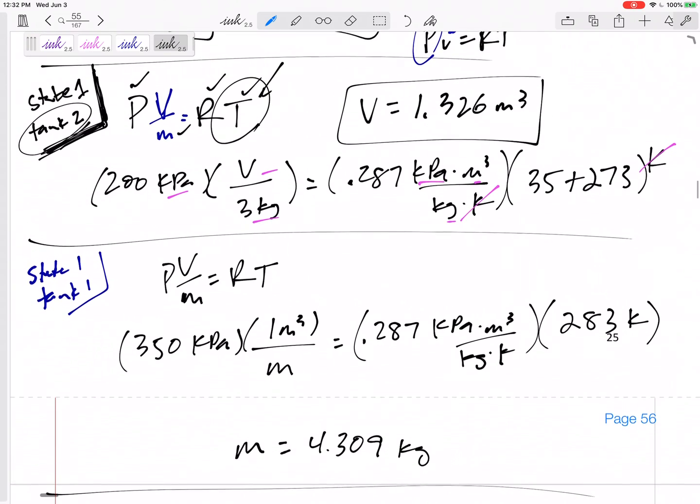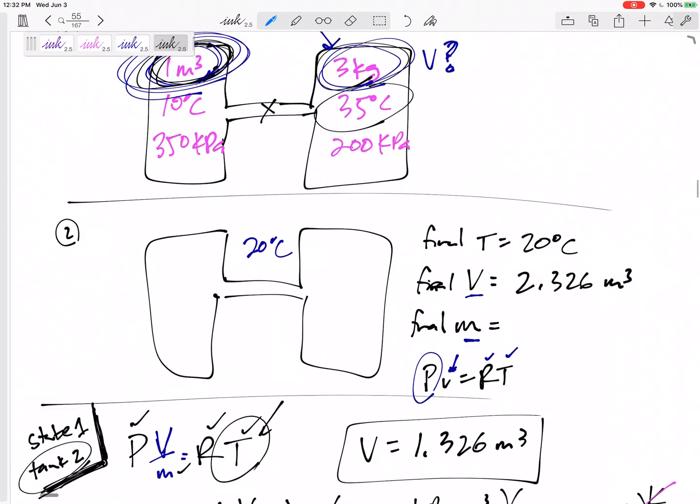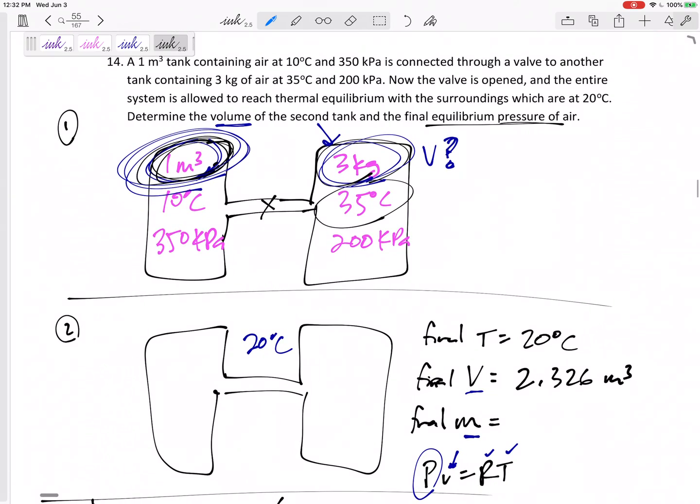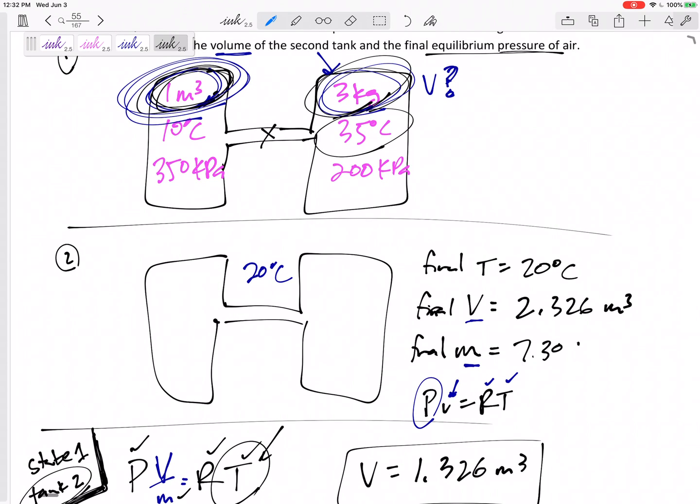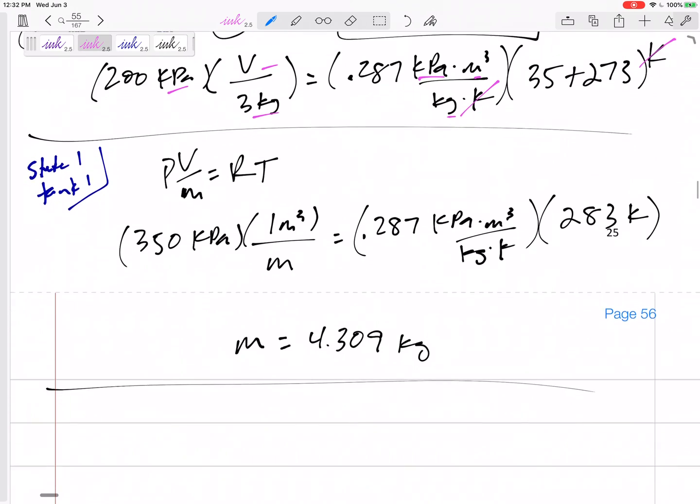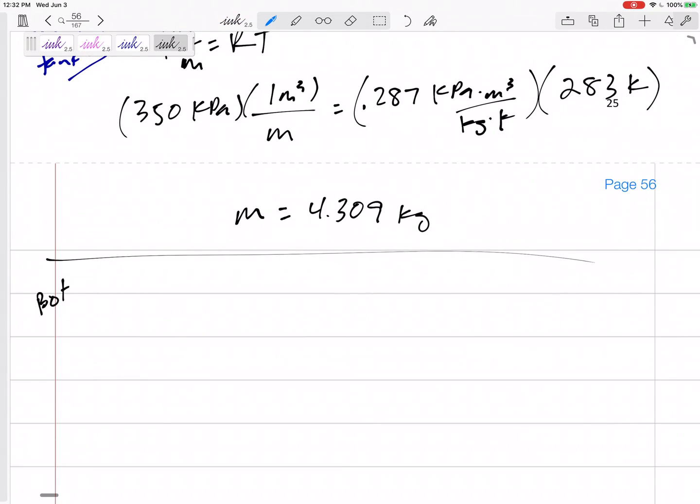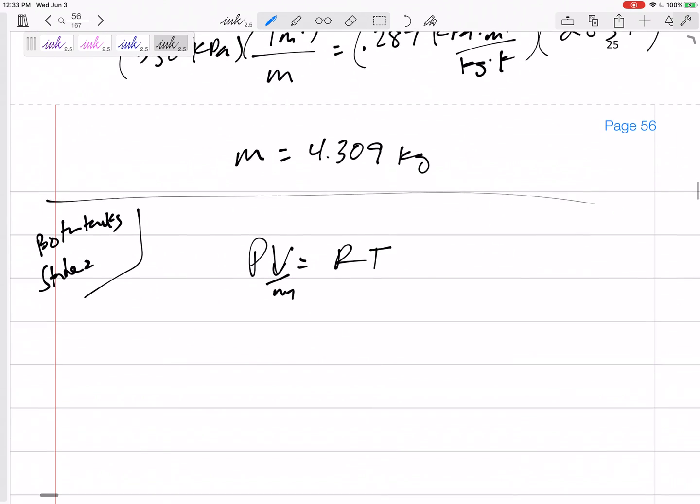So now at state two, my total mass was 3 and 4.309, so 7.309 kg. Now I bet you if we know this, if we know this, if we know this and use ideal gas, we can find the pressure. We can find the pressure. All right, so now I'm looking at both tanks state two, PV=RT and V is capital V over M.